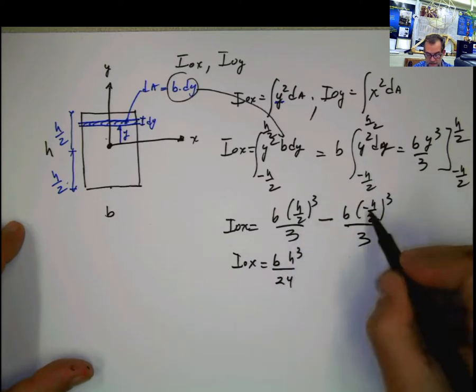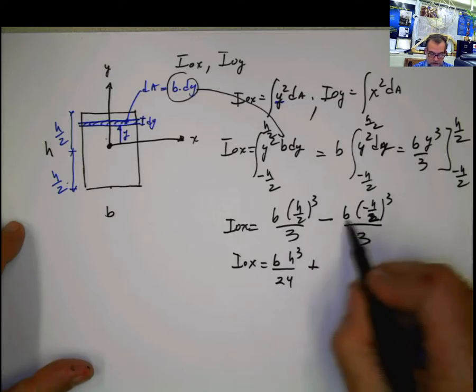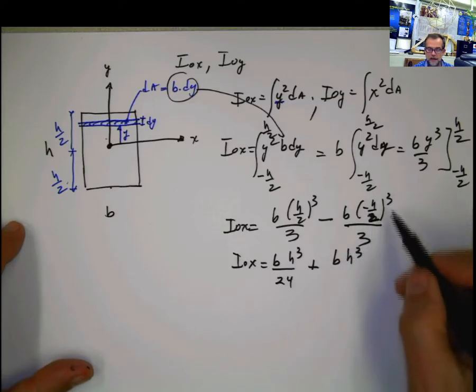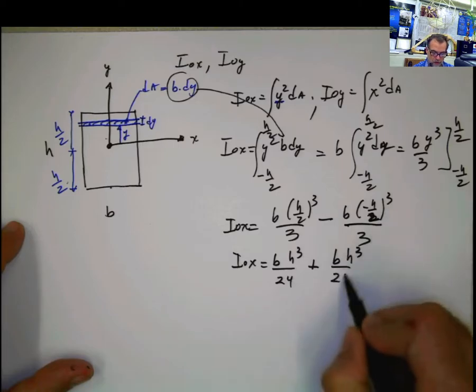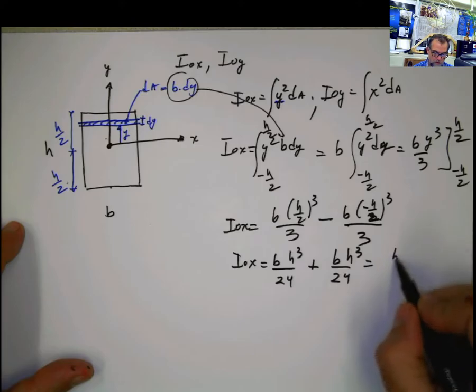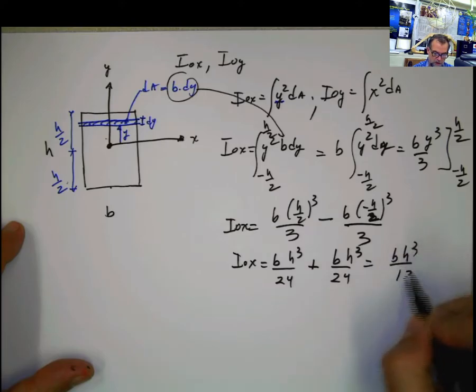Negative to the third is negative. Negative times negative is going to be positive. And b h cubed, 2 to the third is 8 also. 8 times 3, 24. And 1/24 plus 1/24, b h cubed divided by 12.